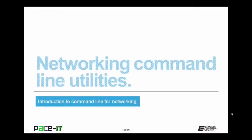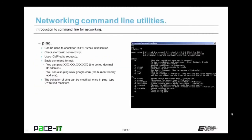Now let's talk about networking command line utilities. The first command is ping. Ping can check for TCP/IP stack initialization if you ping address 127.0.0.1. It's also used to check for basic connectivity between two nodes, which is very useful when diagnosing network issues. It uses ICMP echo requests like a sonar system. The basic command format is ping followed by the IP address in dotted decimal format.